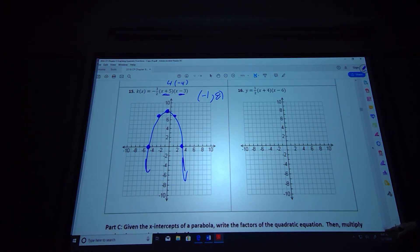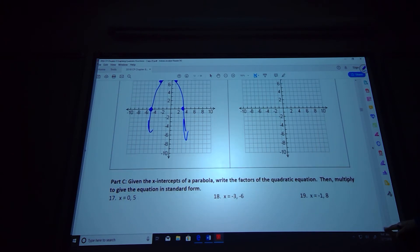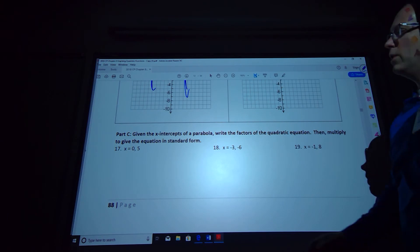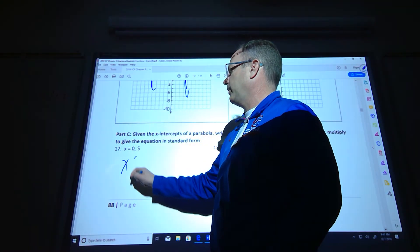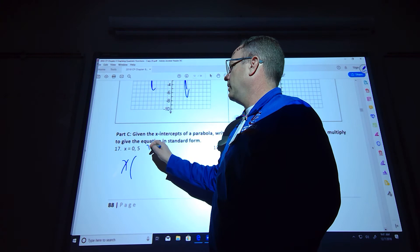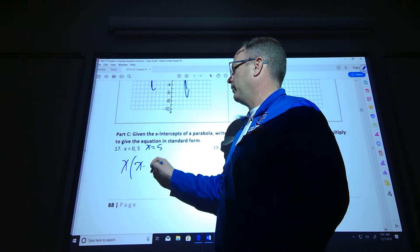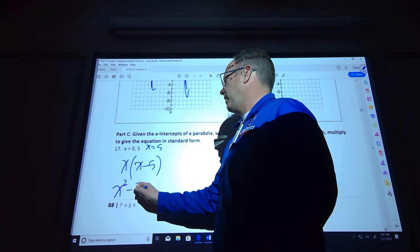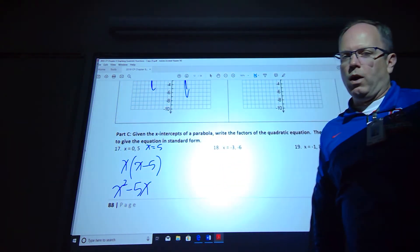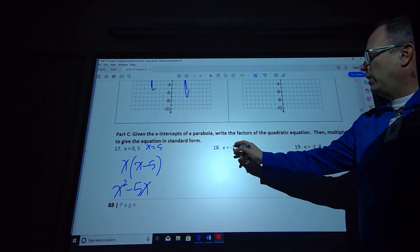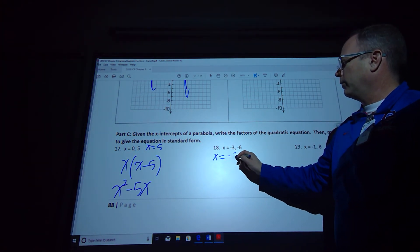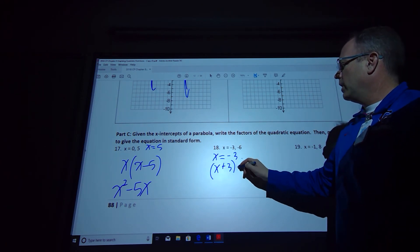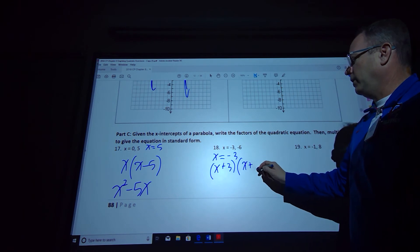All right, on these they want us to put them back together. So you realize if you get x equals 0, that means you just have an x value, and then x equals 5, so subtract 5, so you get minus 5. And then multiply together, so I'm going to get x squared minus 5x. That would be our quadratic for that problem. On this one, that's going to give me x equals negative 3, so x plus 3, because it's opposite I'd have to add that over, and then also x plus 6 for the exact same reason.